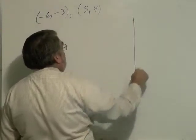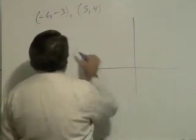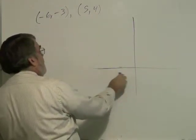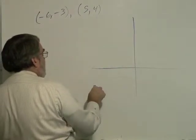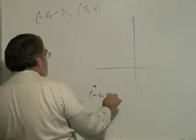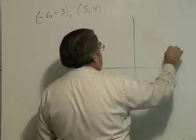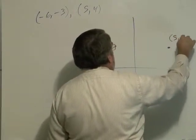Let me take a similar approach here. Minus 6, minus 3, down here. 5 comma 4, over 5, up 4, right around there.